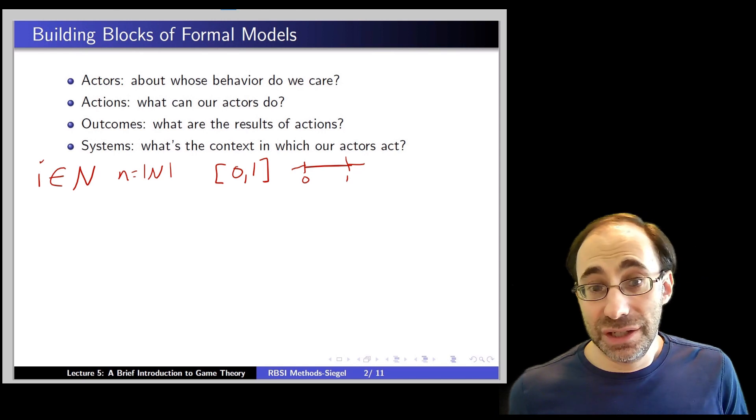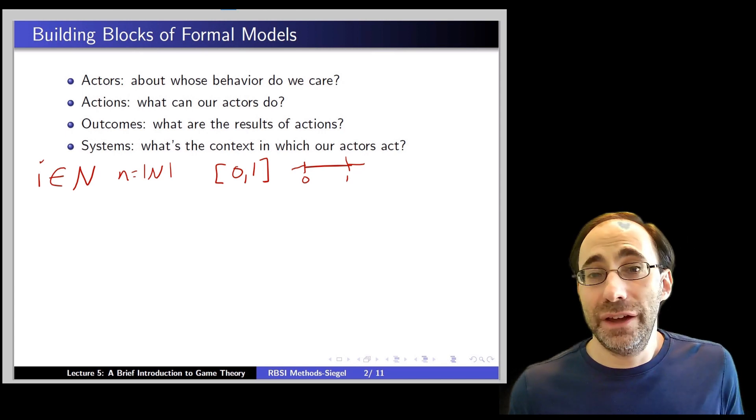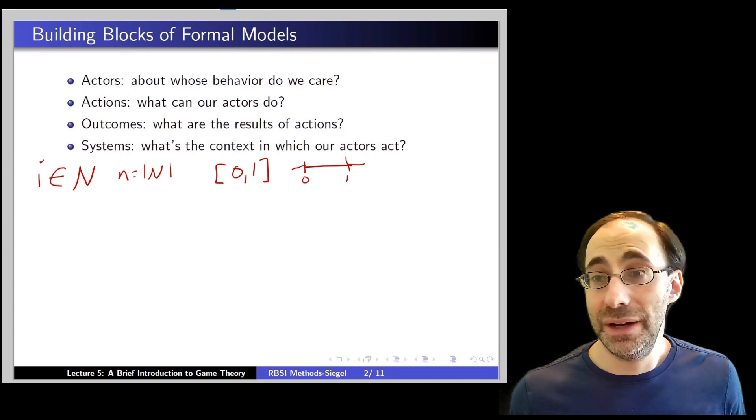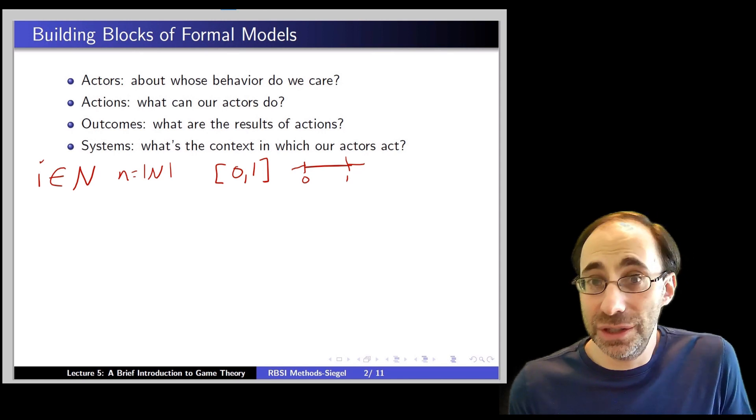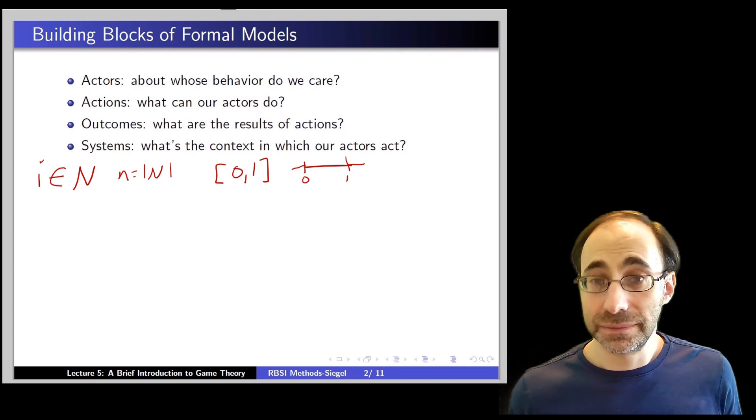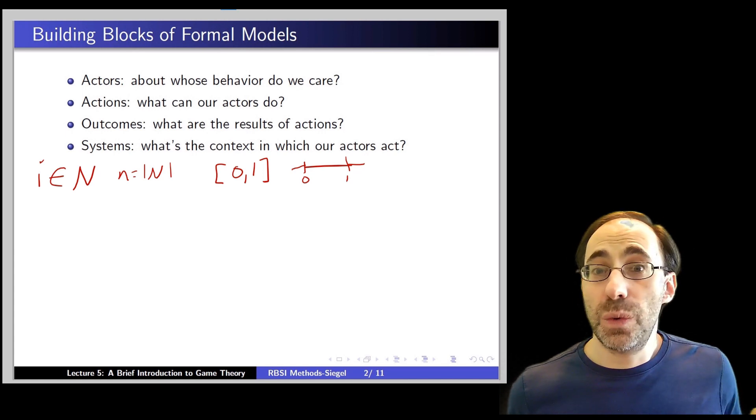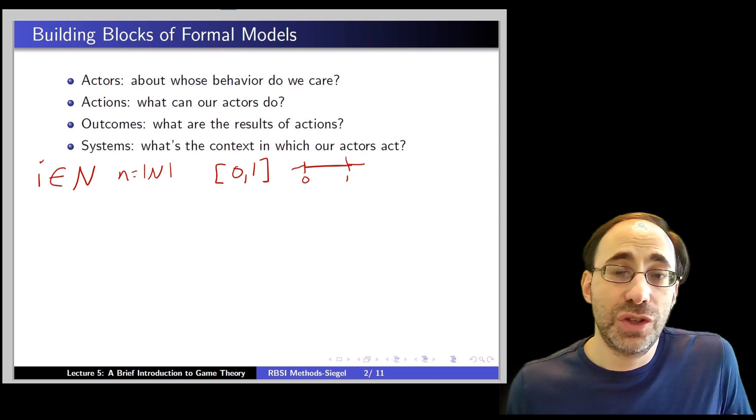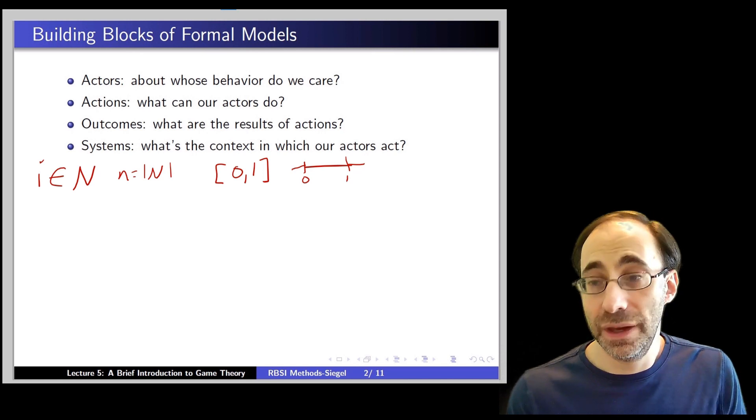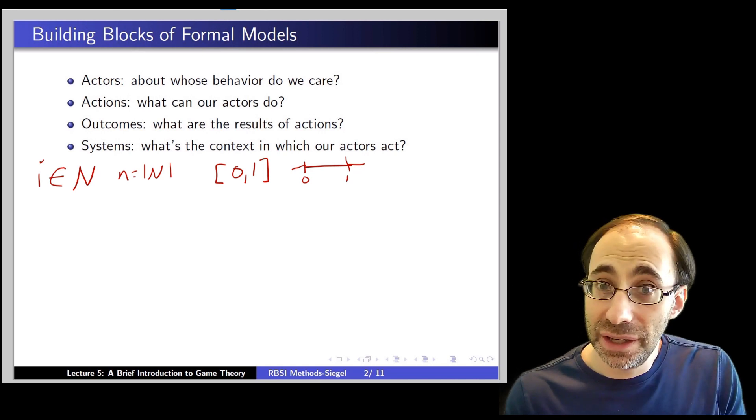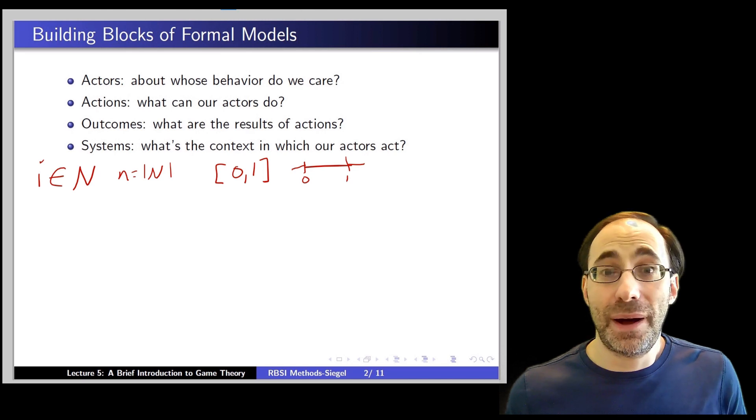The second building block here are actions. What can our actors do? The actions an actor can take are just the things that are available to the actor. Now, in real life, actors have tons of things available to us, right? Right now, I can do an absolute infinite number of things at the moment, right? But in the model, we don't want to capture everything possible an actor can do. We want to focus on the interesting choices an actor might make. So, as we'll see in a couple modules, if we're dealing with a situation in which we're trying to coordinate on some common action, we might consider only two or three possible coordination actions. Two or three possible actions that we might coordinate on.